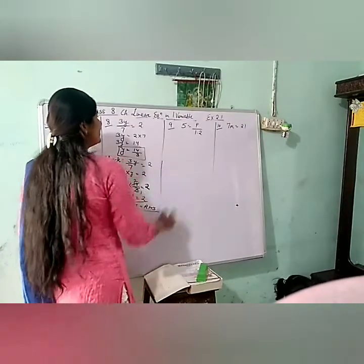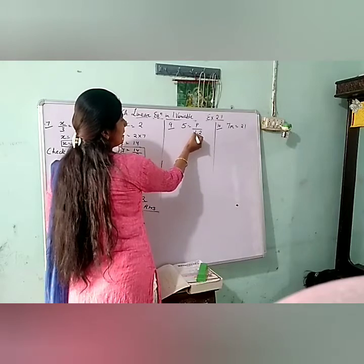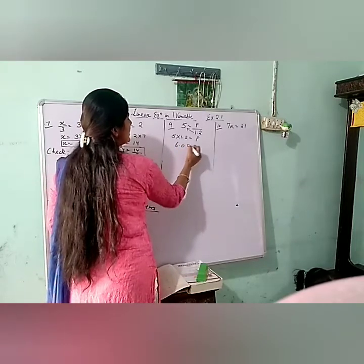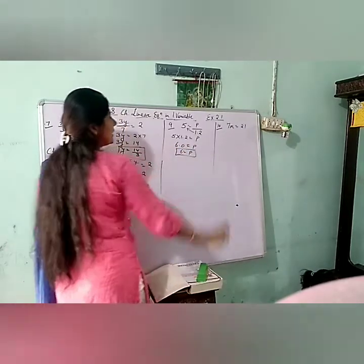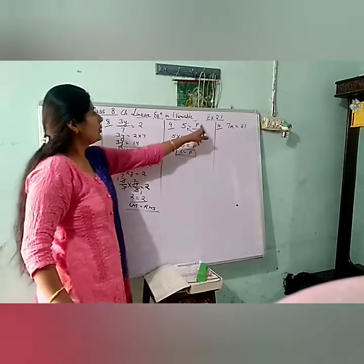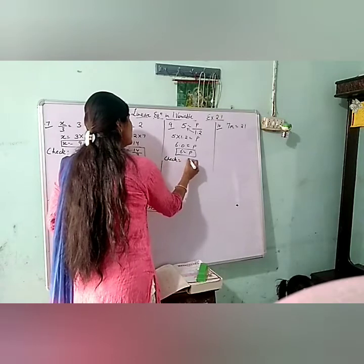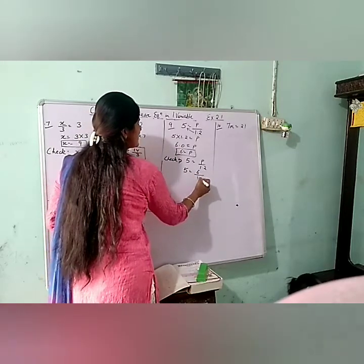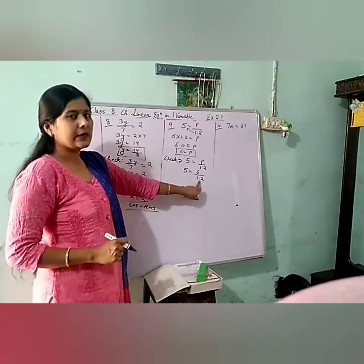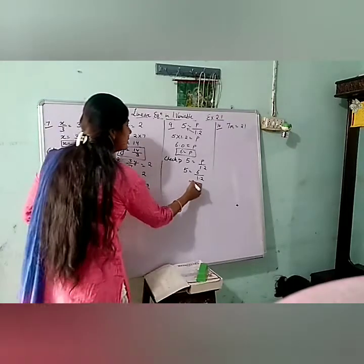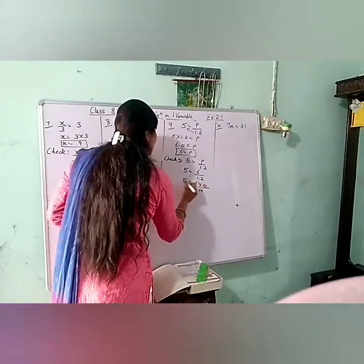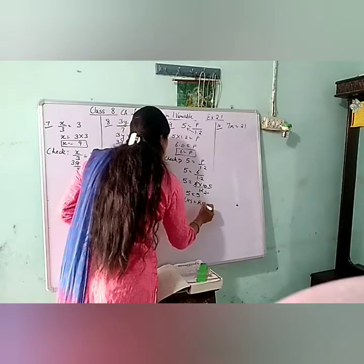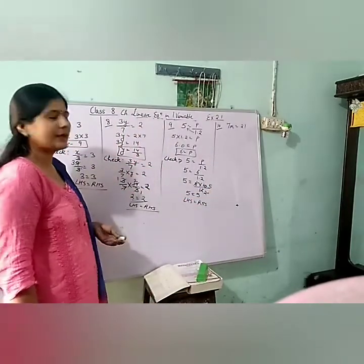9th part: 5 equals P by 1.2. Transposing 1.2 to the left side — multiplication — gives P equals 5 into 1.2, which equals 6.0, meaning P equals 6. Checking: substituting P as 6, we get 6 by 1.2. Multiplying numerator and denominator by 10 gives 60 by 12, which simplifies to 5. So 5 equals 5 — LHS equals RHS.